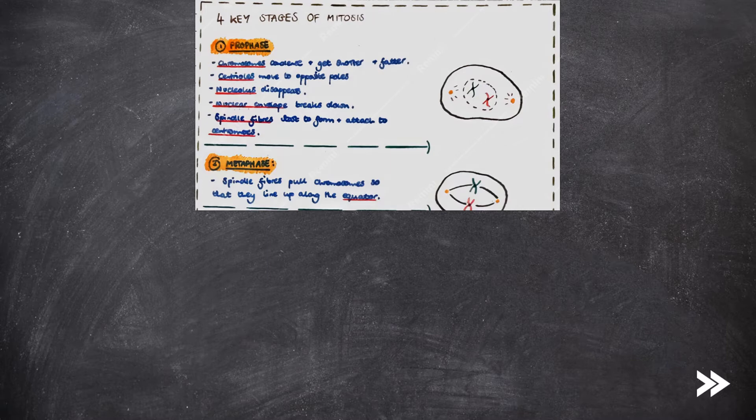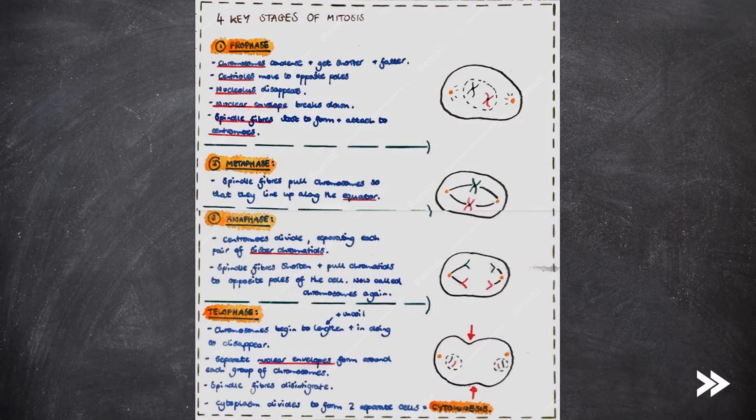We need to know four key stages in mitosis: prophase, metaphase, anaphase, and telophase. In prophase, the chromosomes condense and get shorter and fatter. The centrioles move to opposite poles. The nucleolus or nucleoli disappear, and the nuclear envelope breaks down. Spindle fibres start to form and attach to the centromeres.